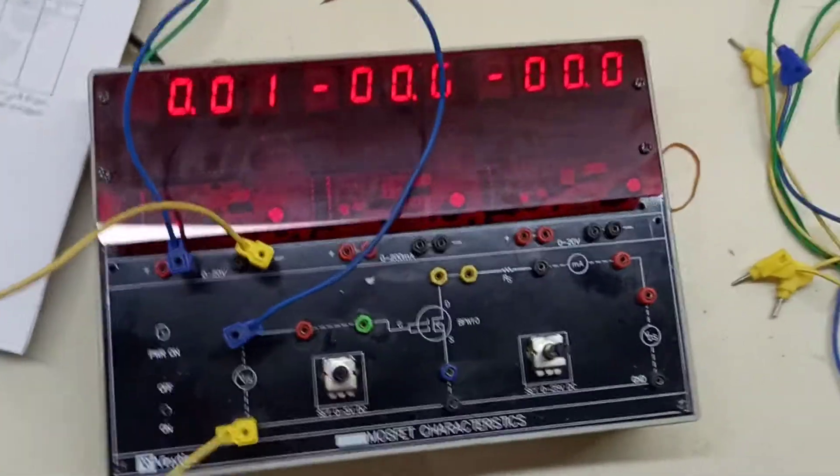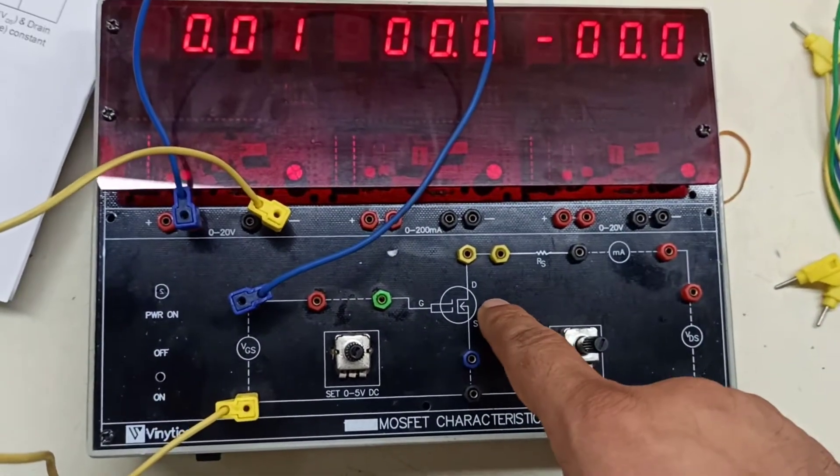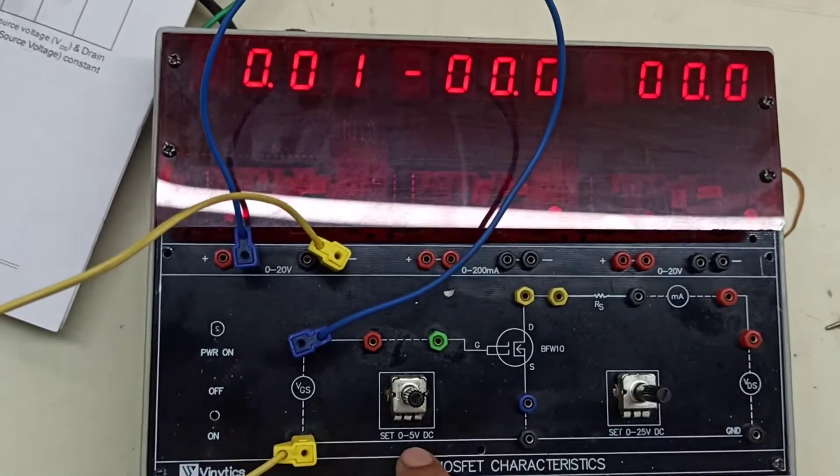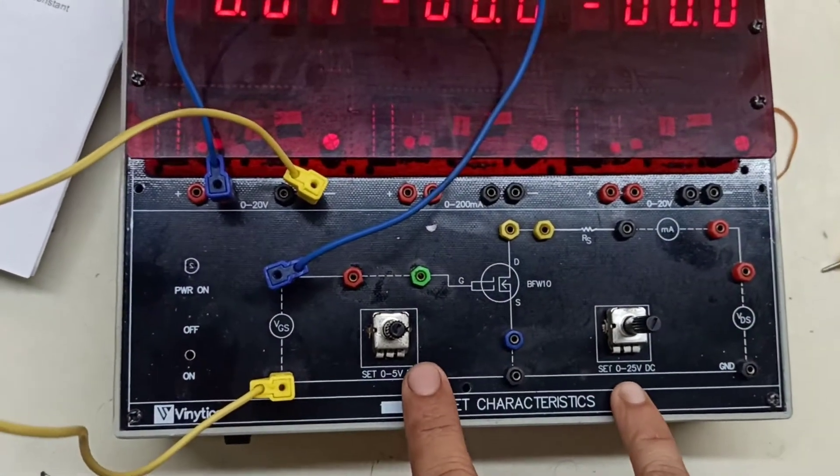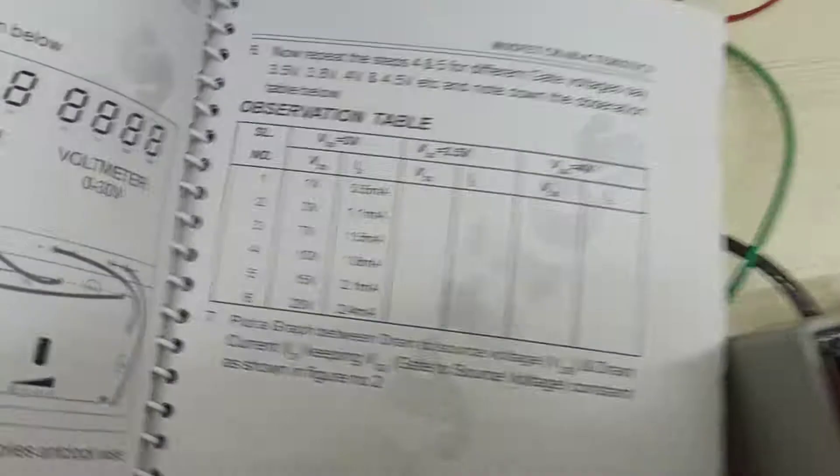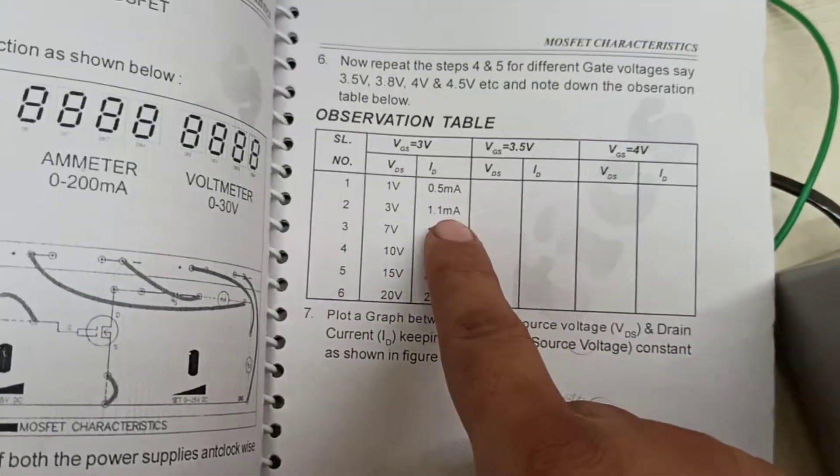This is the MOSFET Characteristics Trainer Kit. In this we have a MOSFET beneath this with connections for gate, drain, and source. We have two variable DC supplies, 0-5V and 0-25V, which we will be using for populating this table.